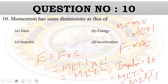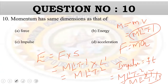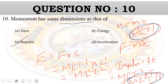Impulse has the same dimensions as momentum. Both have ML¹T⁻¹, so impulse has the same dimensions as momentum.